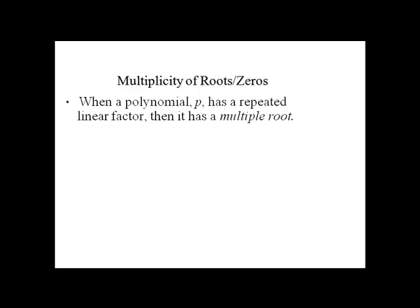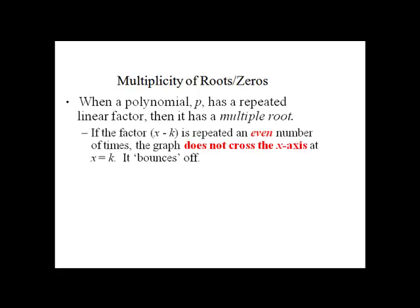So, summarizing, when a polynomial has a repeated linear factor, it has what we call a multiple root. If it's repeated an even number of times, the graph does not cross the x-axis. It actually bounces off.